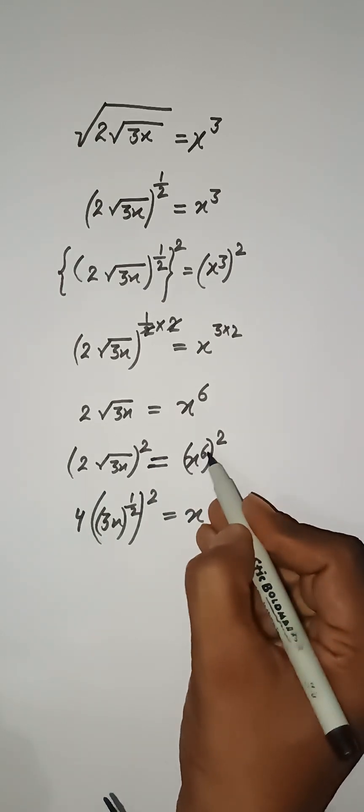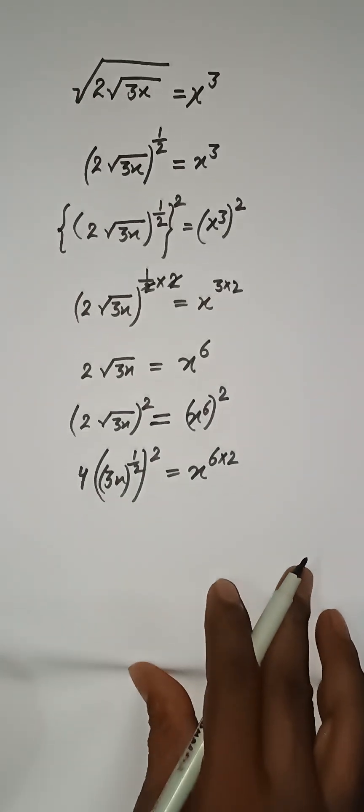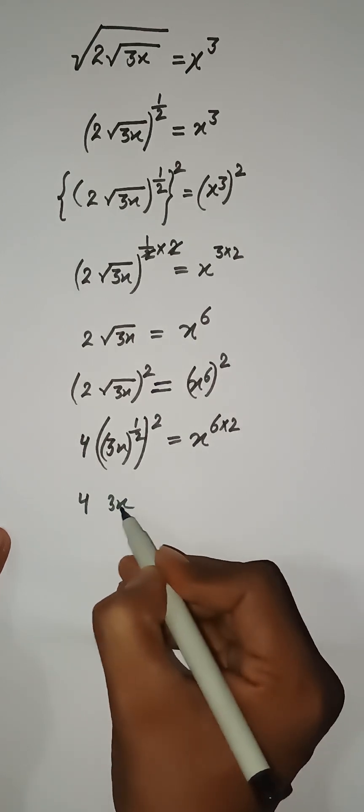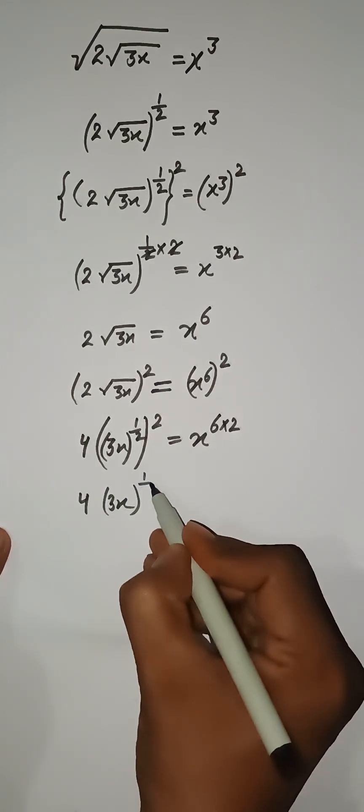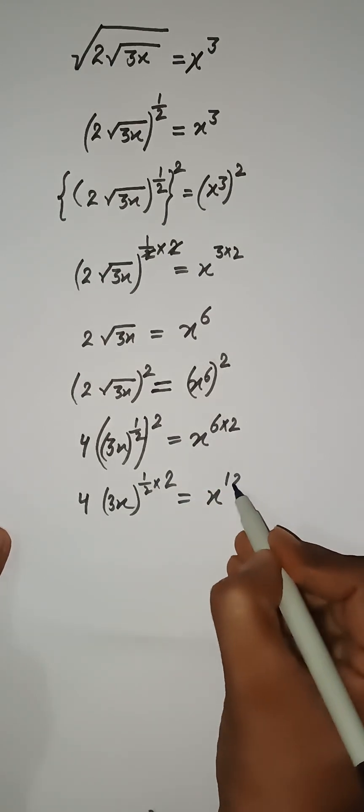We have x and 6 multiply 2 over here as the power of x. Now this 4 and then 3x, this 1/2 and 2 will multiply and here we have x¹².